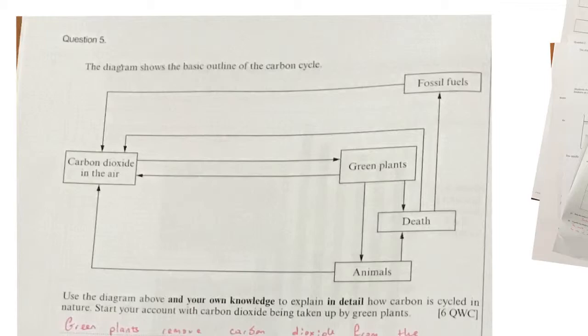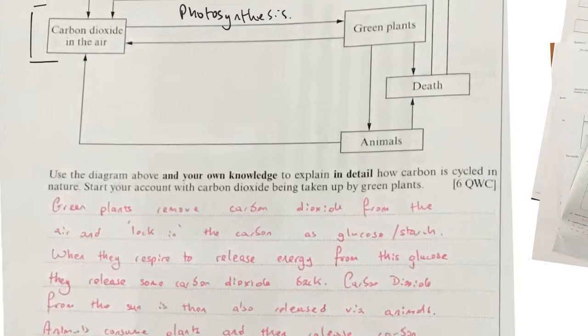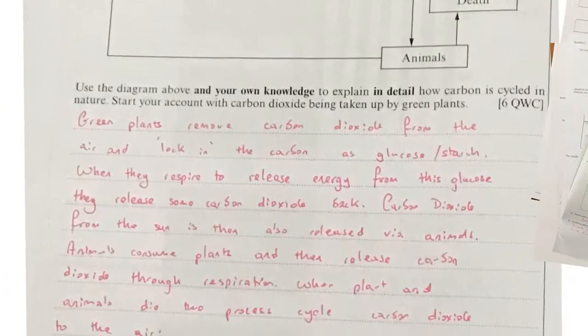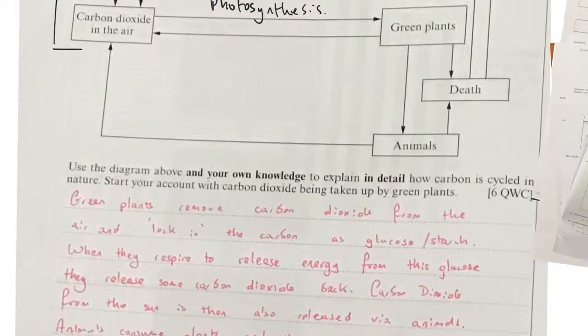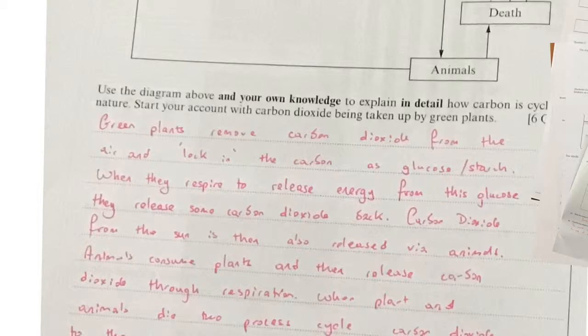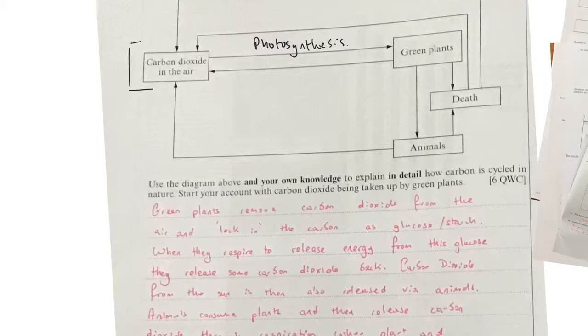The final question covers the carbon cycle. The arrows pointing towards carbon dioxide in the air represent releasing, and the one arrow going out of the air — involving green plants — represents photosynthesis. Green plants remove carbon dioxide from the air and lock in the carbon as glucose or starch. When they respire, they release energy from this glucose, sending carbon dioxide back into the air.